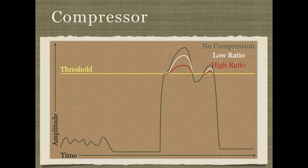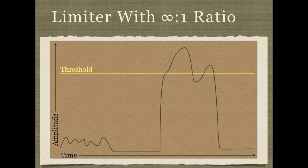With a limiter, though, you set an infinity to one ratio. In other words, no matter how much the original signal went above the threshold, the limiter will turn it down to the threshold and not let it get any higher at all. So with no compression, you've got this shape, and with a limiter, you get this.